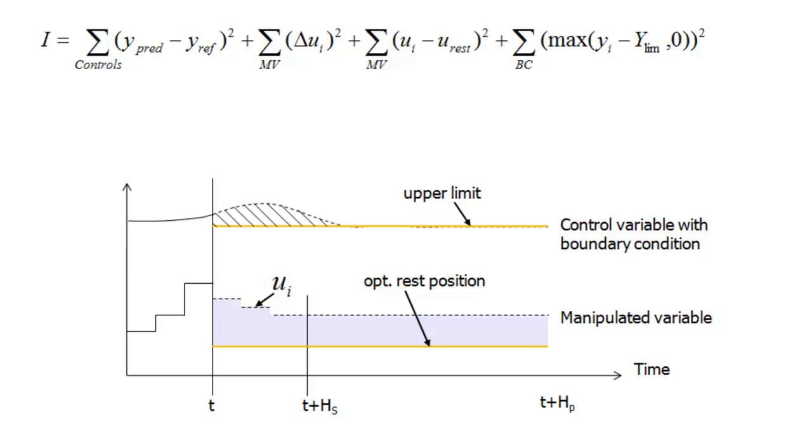Finally, for control variables that have an upper limit instead of a set point, for example NOx and CO, we define the cost as any difference between the variable and the upper limit above zero. In other words, any time the variable exceeds its upper limit, it adds to the cost function. In this manner, the cost function accounts for all the control and manipulated variables in my system.